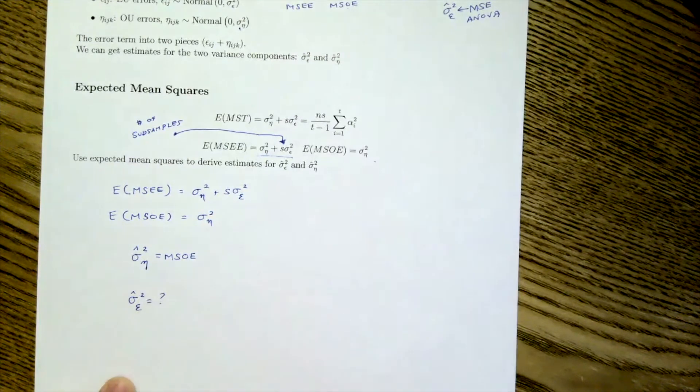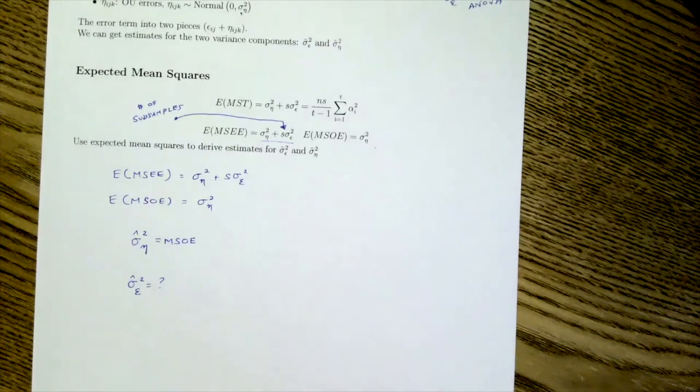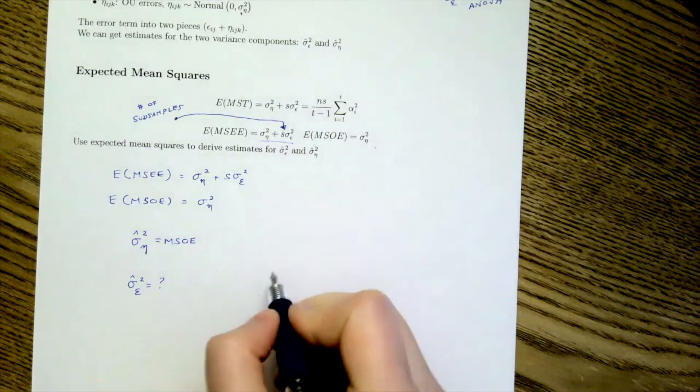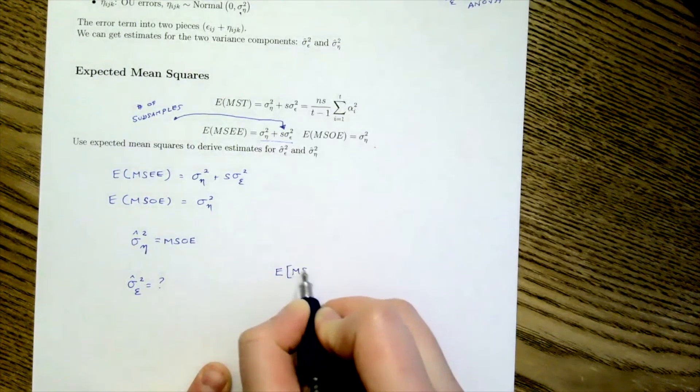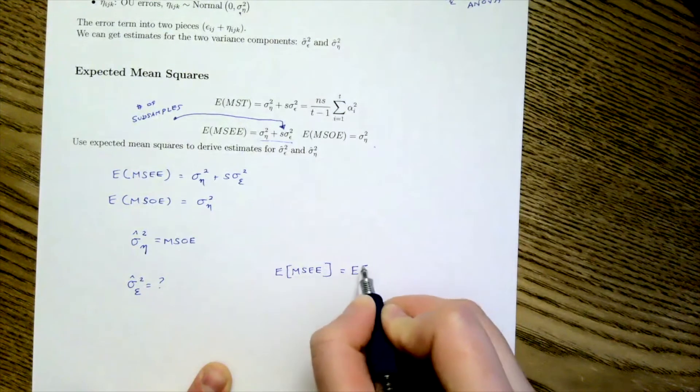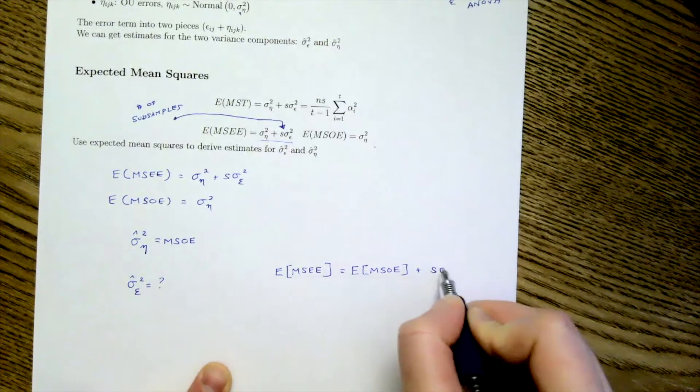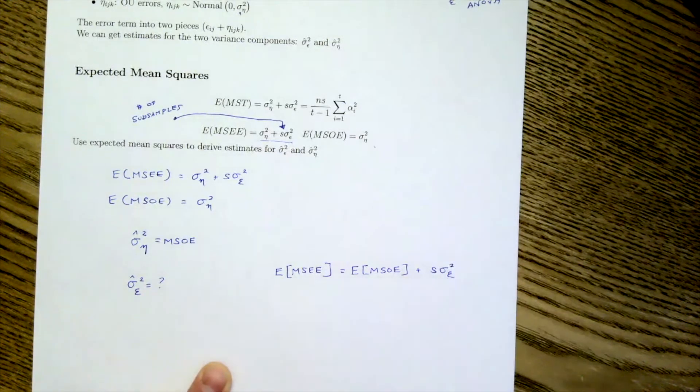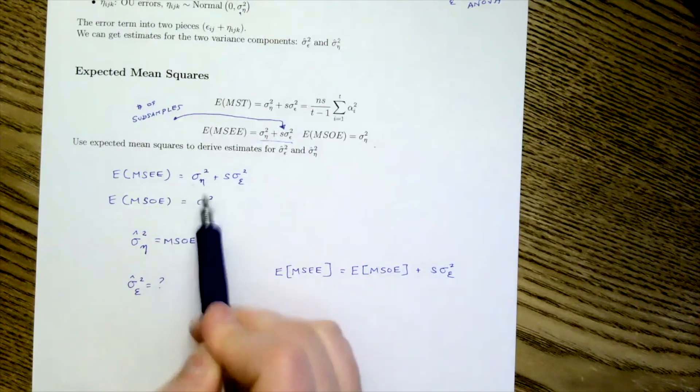It isn't as simple as just saying MSEE. What we have to do requires a little bit more algebra. And so hopefully you guys would agree that if I wrote MSEE is equal to the expected value MSOE plus S sigma squared epsilon. Hopefully you guys agree with me there and all you see is I'm substituting this value into here.